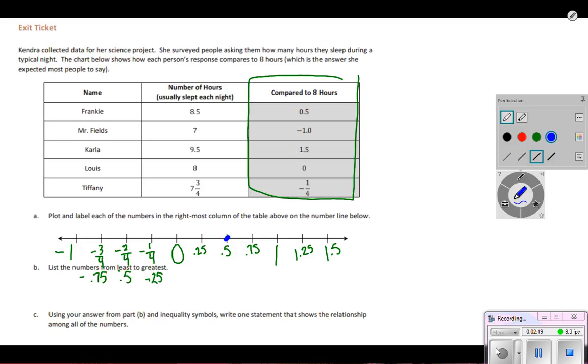Mrs. Fields was one hour under. So here's Mrs. Fields. Carla got one and a half hours more sleep. So Carla is one whole plus 0.5. Louis is right at zero, which means he must have gotten exactly eight hours. There was no change up or down. And Tiffany is at negative one fourth or negative 0.25.